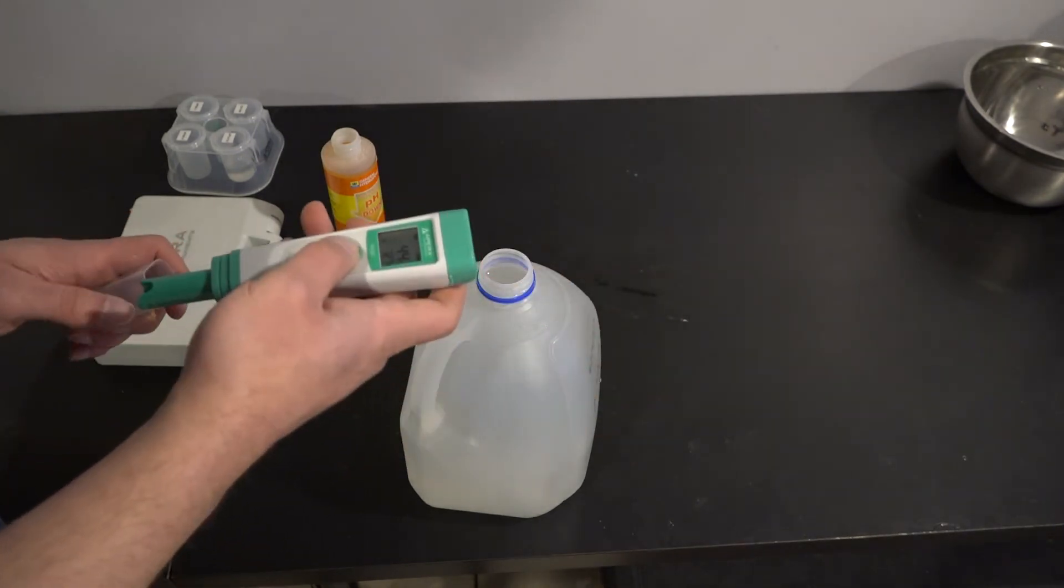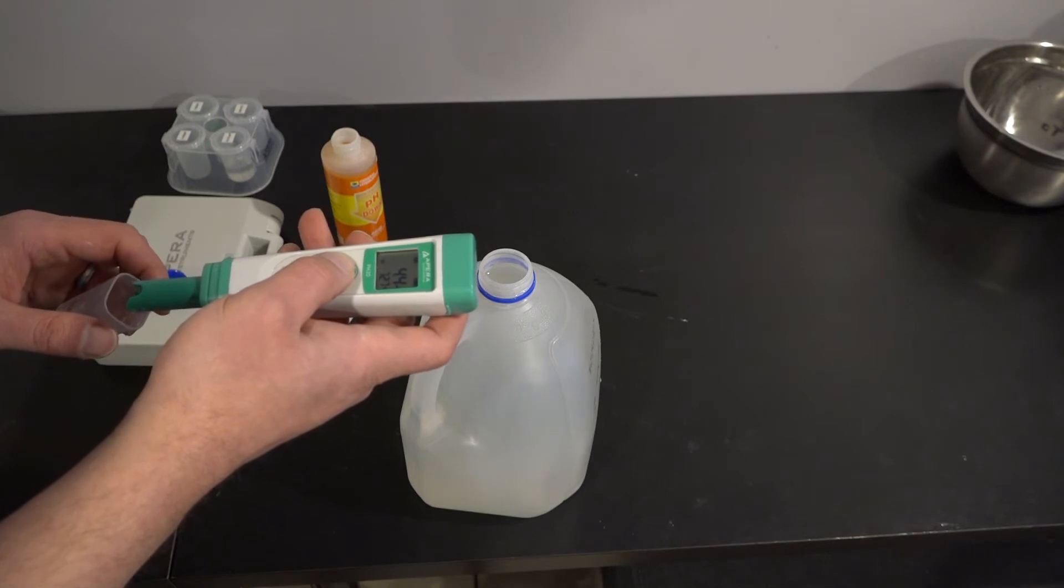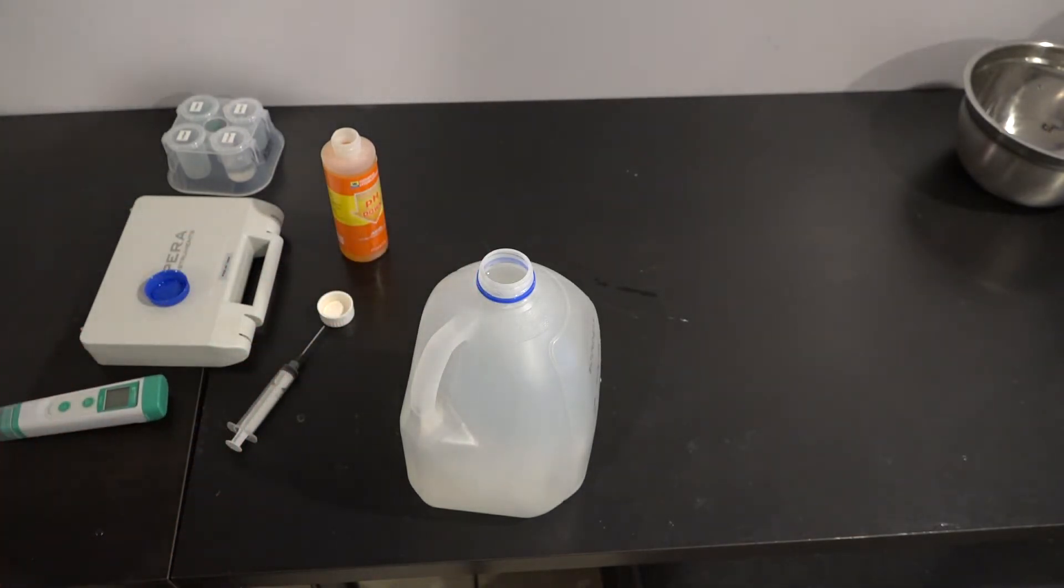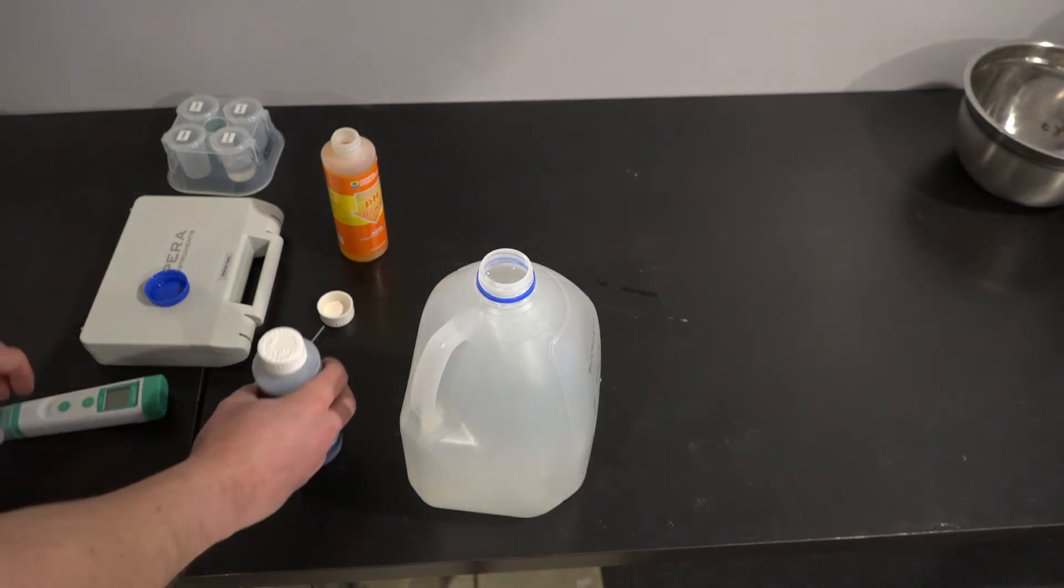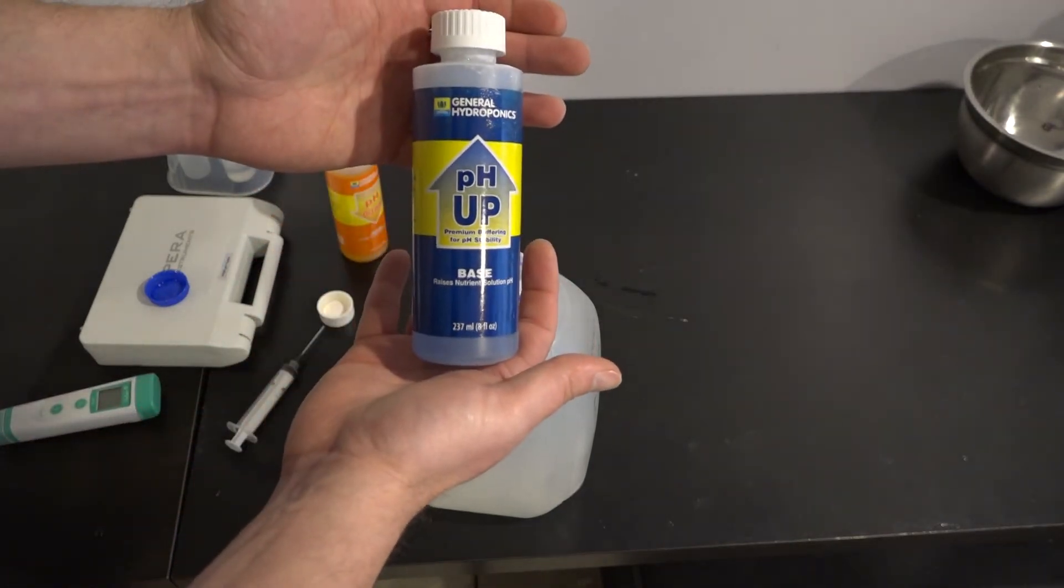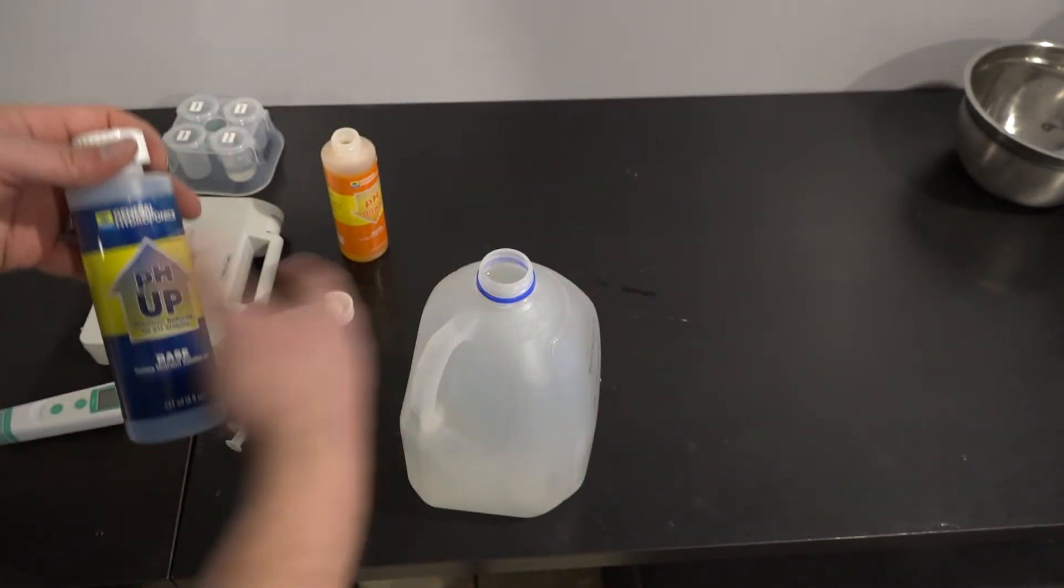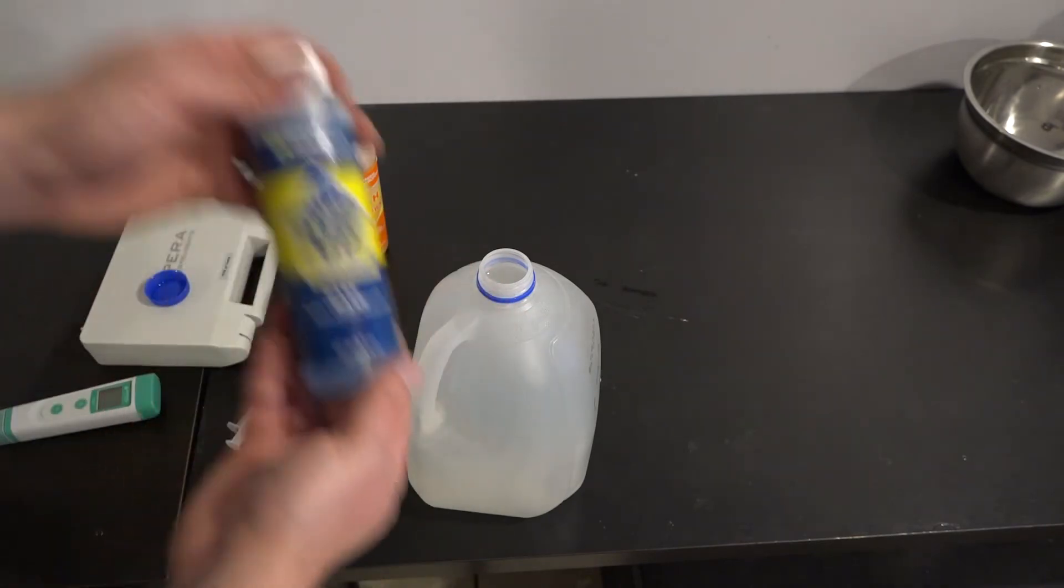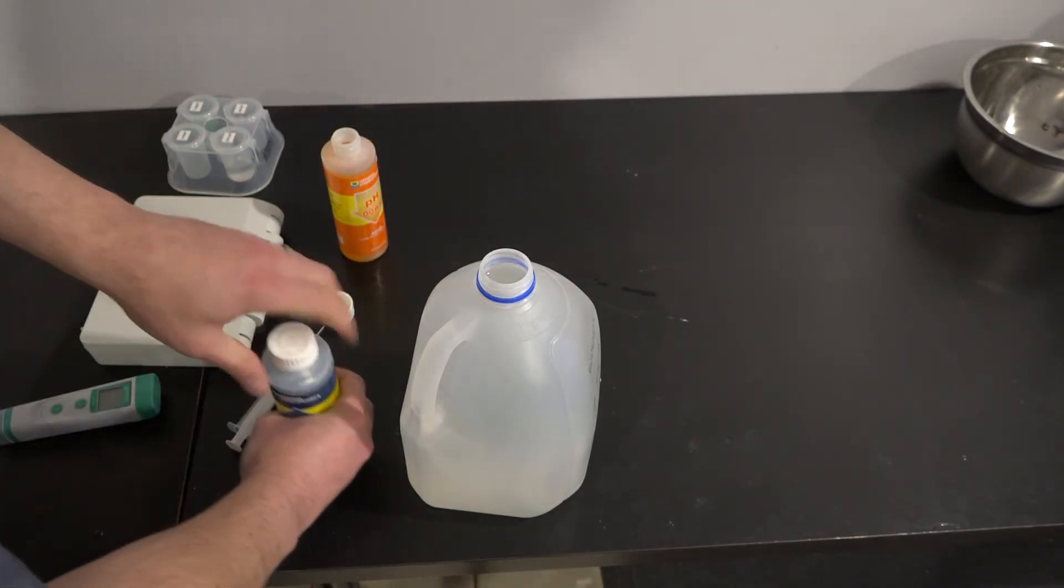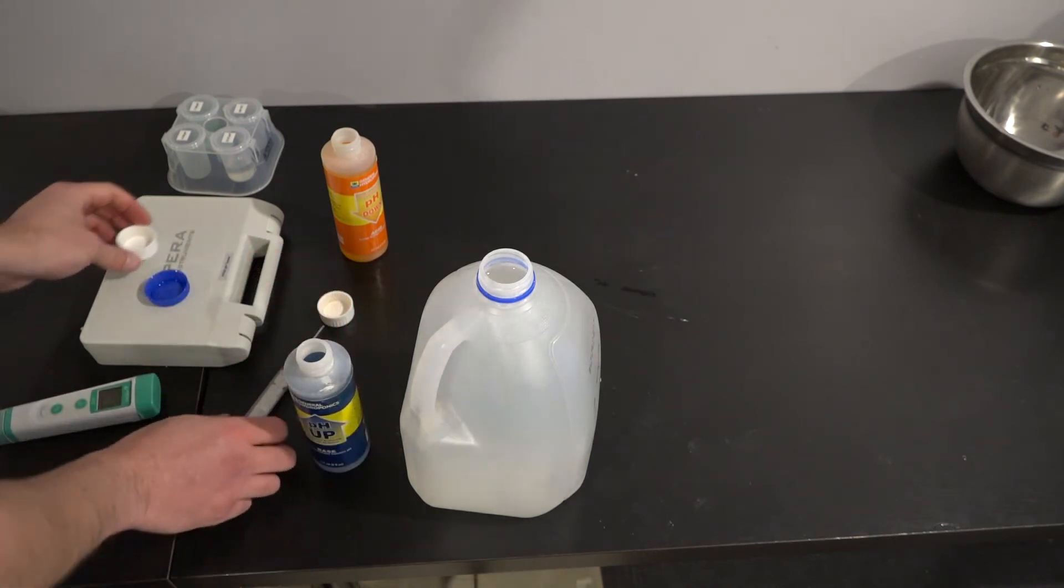So, now what I'm going to do is I'm going to add some pH up. And typically, I don't have this problem, but I'm starting from a higher pH point. So, bear with me, and I'll show you how to make your little corrections. So, here we are. Now, we use pH up. Because I went over on my pH down, I've got to raise it back up. And maybe I did that on purpose, just to show you this product.